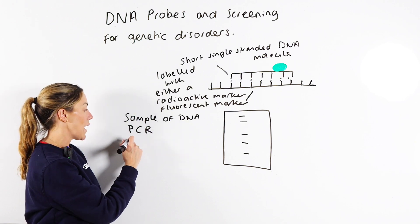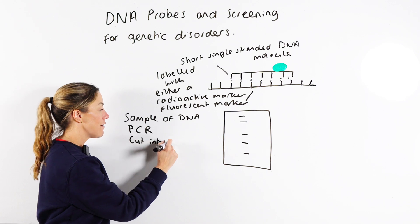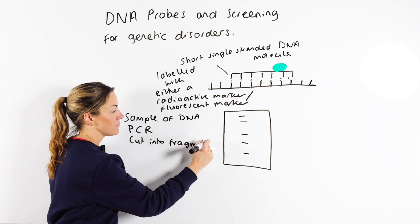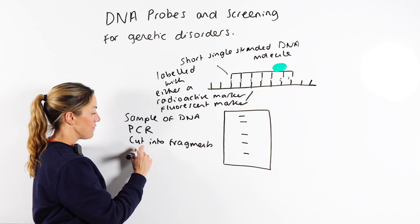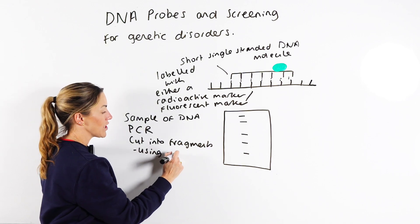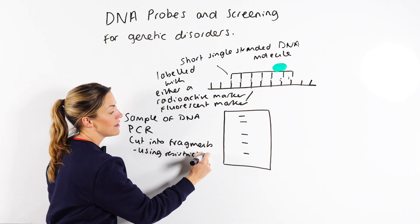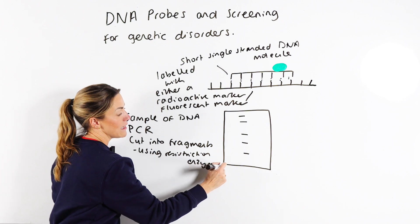So take your sample of DNA, use PCR to amplify it, then you're going to cut into fragments. So you've got shorter fragments of DNA, obviously this is using restriction enzymes or restriction endonucleases, if you want to call them that.